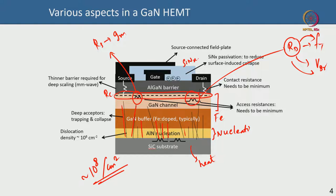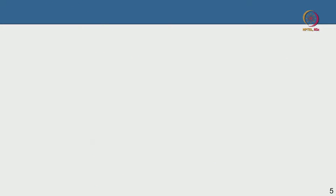You need silicon nitride passivation to reduce current collapse, because donor-like surface states can trap electrons. When you pulse the gate, the current in the channel cannot respond as fast because the traps are slow. However, silicon nitride passivation reduces breakdown to some extent because it prevents surface donor states from depleting the channel below. There is a trade-off. A self-aligned gate field plate and source field plate help improve breakdown.